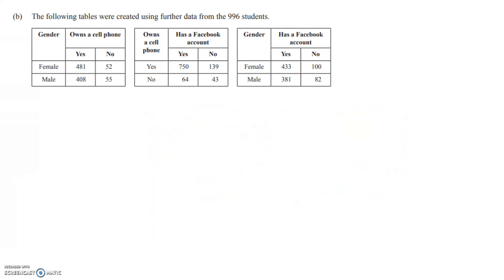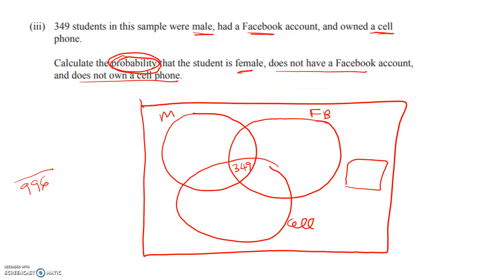You're going to have to have the tables in front of you. The next thing we've got to figure out is we can work out how many males own a cell phone and how many males have got Facebook. So 408 own a cell phone and are male. I know that those two numbers have got to add up to 408. Male and Facebook, those two numbers have got to add up to 381. So 408 take away 349 equals 59. So I'm going to put this number in here now, that's 59. Similarly, I'm going to do 381 minus 349, gives me 32 to go in here.